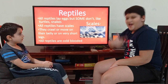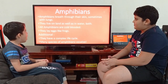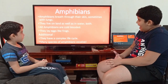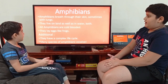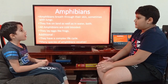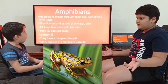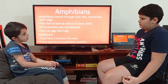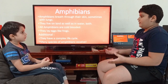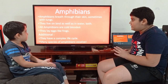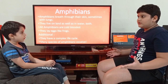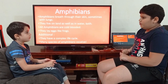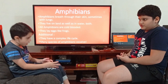Now let's learn about amphibians. Amphibians breathe through their skin, sometimes with their lungs. They live on land as well as water. All amphibians are cold-blooded, and they lay eggs, just like frogs. Amphibians have a complex life cycle, and many species of amphibians vocalize — that means they can make sounds. Some examples of amphibians are toads, frogs, and salamanders.